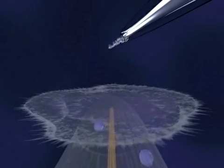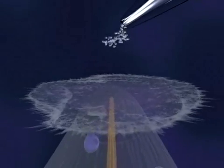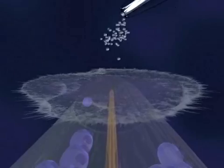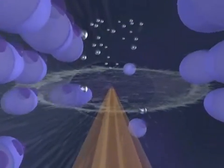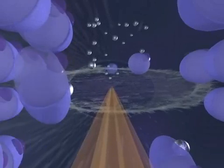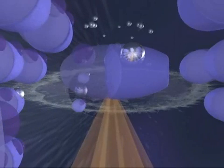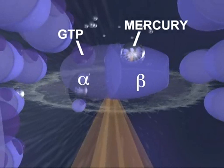When mercury ions are introduced into the culture medium, they infiltrate the cell and bind themselves to newly synthesized tubulin molecules. More specifically, the mercury ions attach themselves to the binding site reserved for guanosine triphosphate, or GTP, on the beta subunit of the affected tubulin molecules.